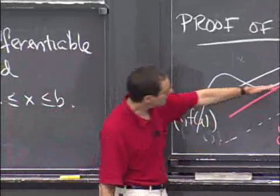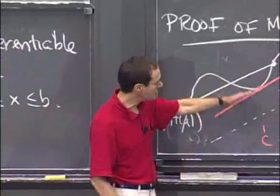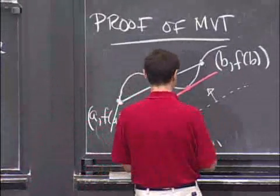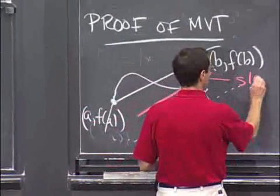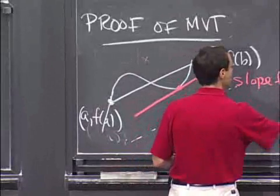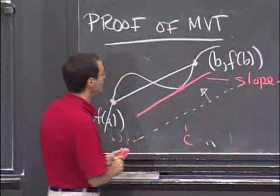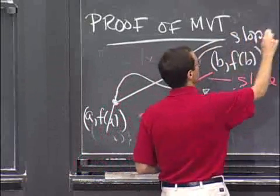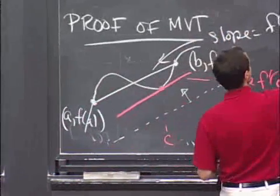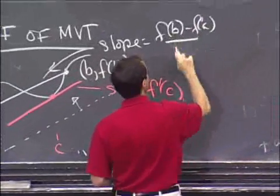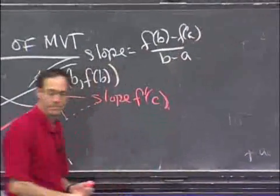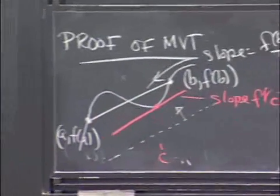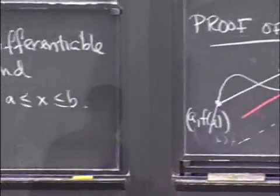You can see that if the tangent line is parallel to this line, that's exactly the equation that we want. So this thing has slope f prime of c, and this other one has slope equal to this complicated expression, f of b minus f of a divided by b minus a. That is almost the end of the proof.